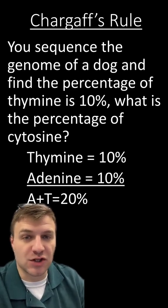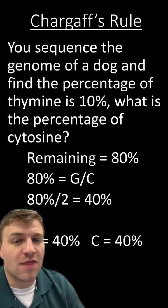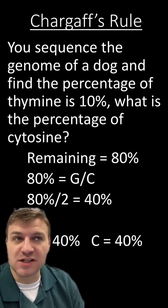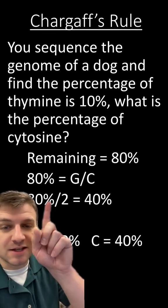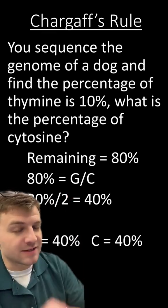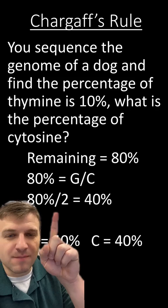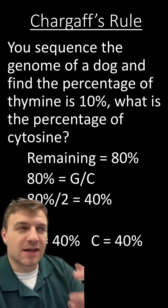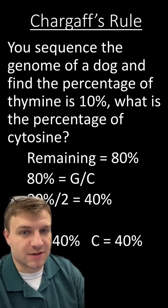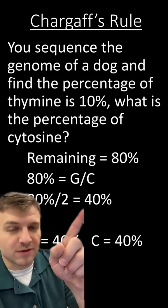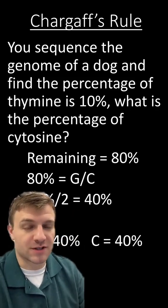If we add those two percents together, we get 20%. So the AT concentration within the genome of this dog is 20%. The remaining percent of the DNA is going to be 80%, and that 80% is made of guanine and cytosine. All we have to do is take this 80% and divide it by 2, because the amount of G's and C's will roughly be the same, and we get 40%. So the answer here is 40%.